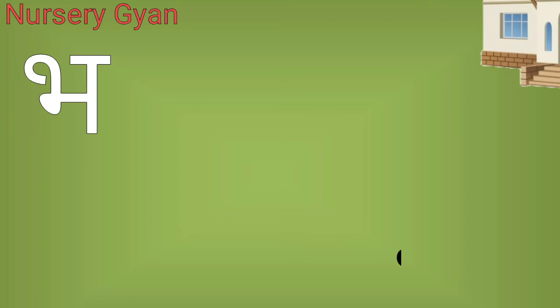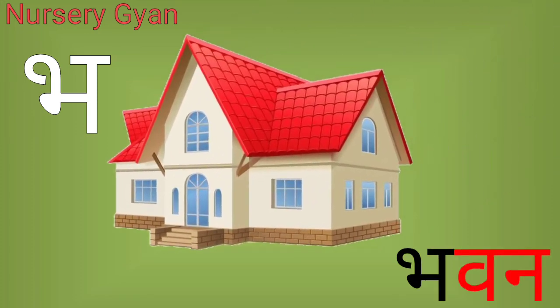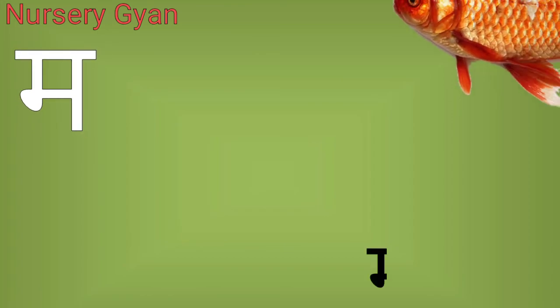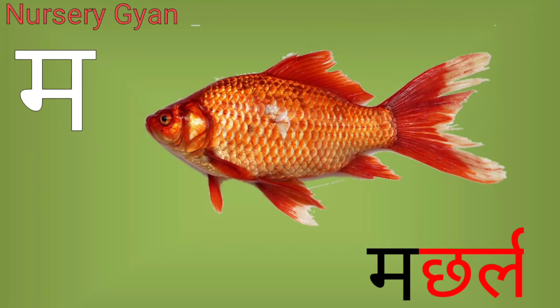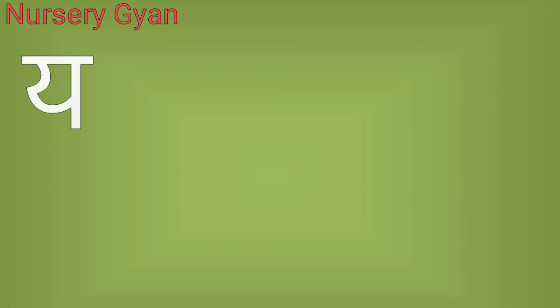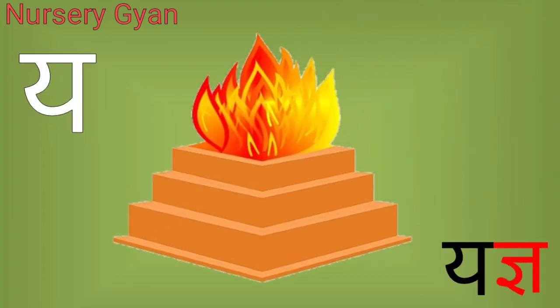भ — भ से भवन। म — म से मछली। य — य से यज्ञ।